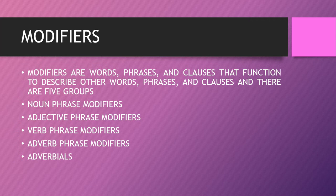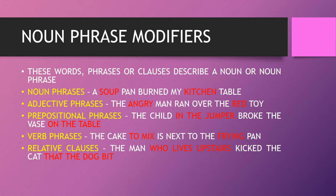Don't be frightened of the expression 'noun phrase modifiers' — these words, phrases, or clauses describe a noun or noun phrase and usually go before it, because it's English. For example, 'a soup pan burned my kitchen table' — we're using a noun to further modify another noun, a noun-noun collocation, like 'football player' or 'tennis racket.' They also modify adjective phrases: 'the angry man ran over the red toy' — adjectives that sit before nouns.